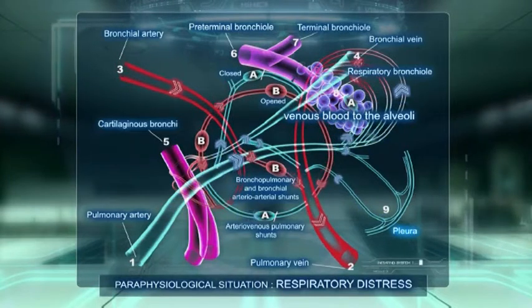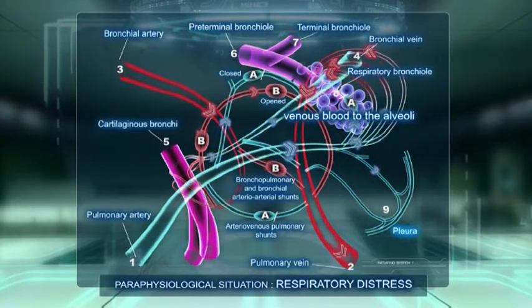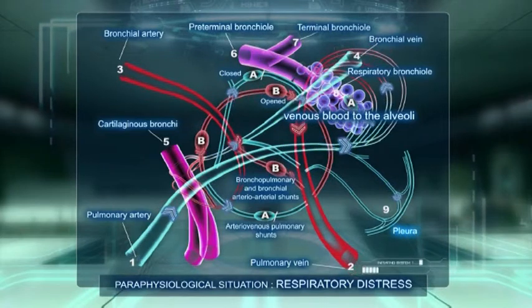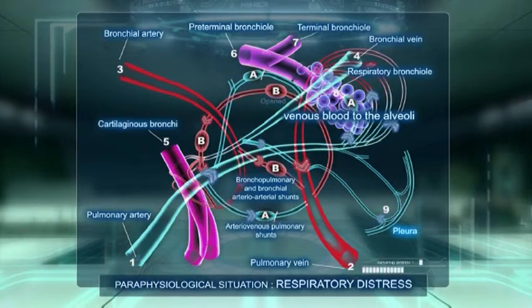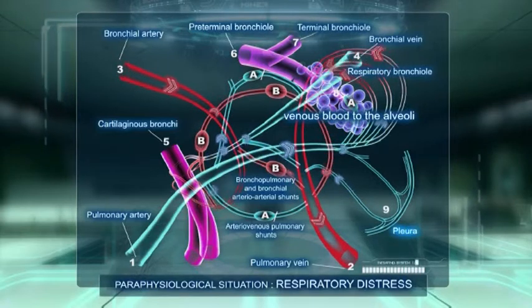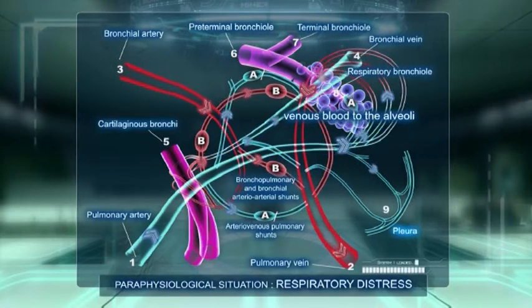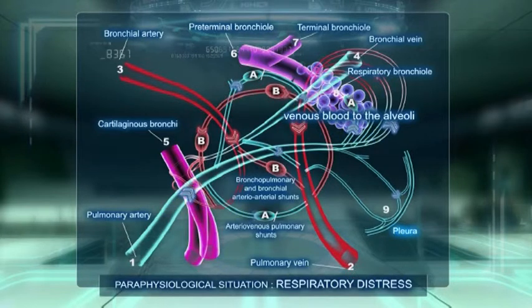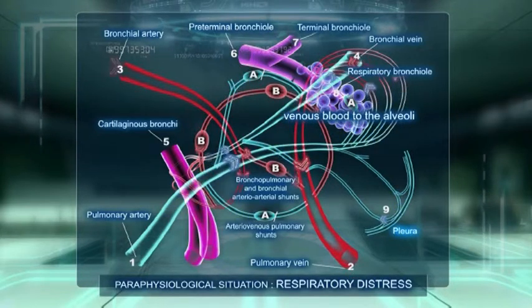On the other hand, the red bronchial shunts, which are normally closed, open only when there is a drop in pressure in the right chambers of the heart and or in the arterial pulmonary vascular bed, such as in cardiac failure and in many pulmonary chronic diseases.